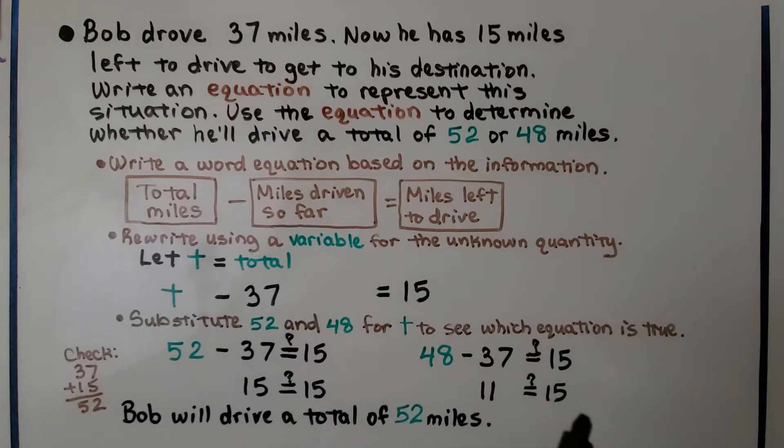Is 11 equal to 15? So we see that Bob will drive a total of 52 miles, and we can see that this makes the equation true. The 52 makes the equation true. And we can double check it. We can add 37 plus 15, which is equal to 52, so we know we have it right.